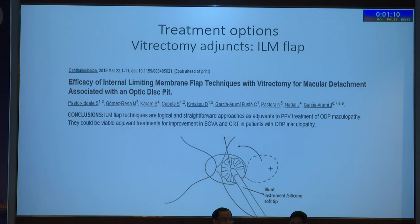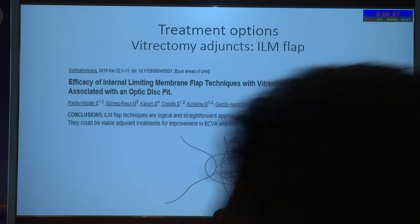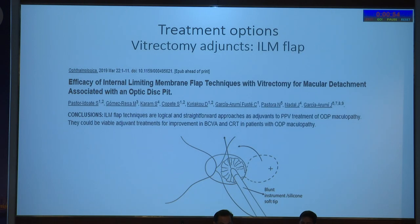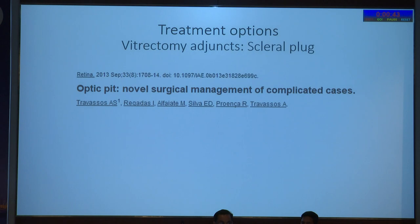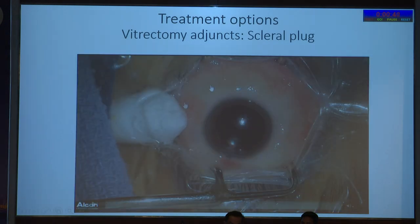One option is plugging — whether it is a macular hole or ODPIT, we want to plug it. Two plug types are compared: the ILM plug and the scleral plug. We have compared all three approaches. The scleral plug technique is very simple: after complete vitrectomy, you raise a small partial-thickness scleral flap in the inferonasal or inferotemporal quadrant using a crescent blade and trim it as required.